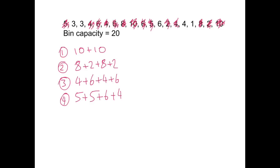The remaining ones don't actually make up a full bin. We've got a 3 and a 3 and a 6 and a 4 and a 1, which makes 17 in total. Crossing off those — 3, 3, 6, 4, 1 — I can see I've got nothing left.